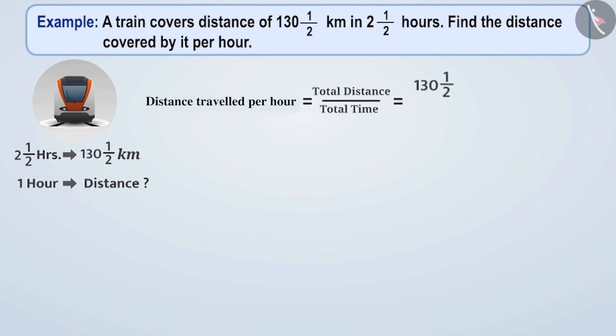That is, we have to divide 130.5 by 2.5. Can you tell how this division will be done? Think for a while.